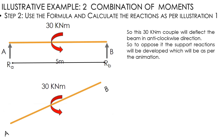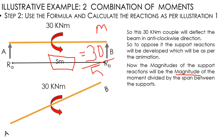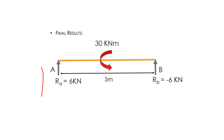Step two: apply the formula. The magnitude of the support reaction = MR/L = 30/5 = 6 kilonewtons. The reaction at A is +6 kN, acting vertically upward (positive sign confirms assumed direction is correct). The reaction at B is −6 kN, acting vertically downward.